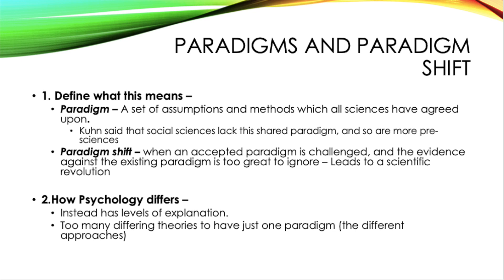Next we've got the idea of paradigms and the paradigm shift. A paradigm is a set of assumptions and methods which all sciences have agreed upon. It's been said that social sciences lack this shared paradigm and so are more pre-sciences. The paradigm shift is when an accepted paradigm is challenged and the evidence against it is too great to ignore, leading to a scientific revolution and then a new paradigm. Because psychology lacks a shared paradigm, you may want to explain how psychology differs — instead of a paradigm, psychology has levels of explanation, due to its many differing theories, as clearly seen through the different approaches which contradict each other.